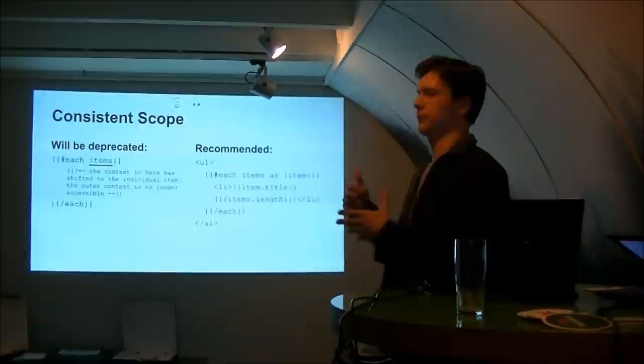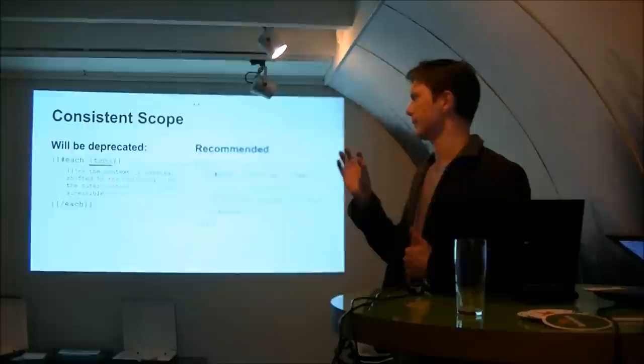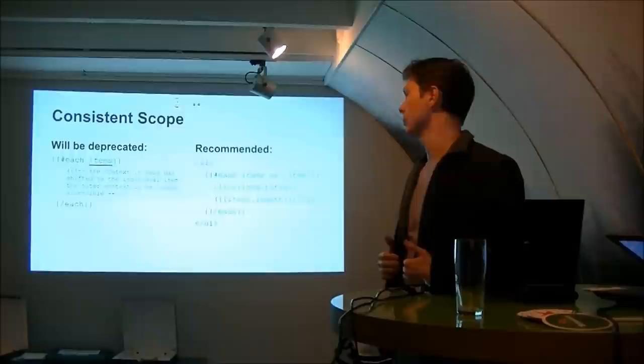Previously, when we are already in the middle of each scope, we have no access to the outer. We know some, we know properties of a given item. But we cannot get access to the, for example, something related to the all collection. To the all items.